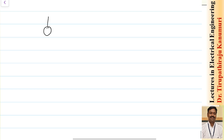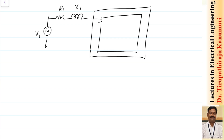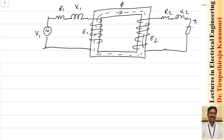Now let us take the exact equivalent circuit of a transformer. There is a source voltage V1 applied; the winding resistance R1 and leakage reactance X1 are represented as series branch elements because they depend on load current. A flux is produced in the core, linking both primary and secondary windings, inducing E1 and E2 respectively. On the secondary side, there are drops due to R2 and X2, with the remaining voltage reaching terminal V2 across load impedance ZL.